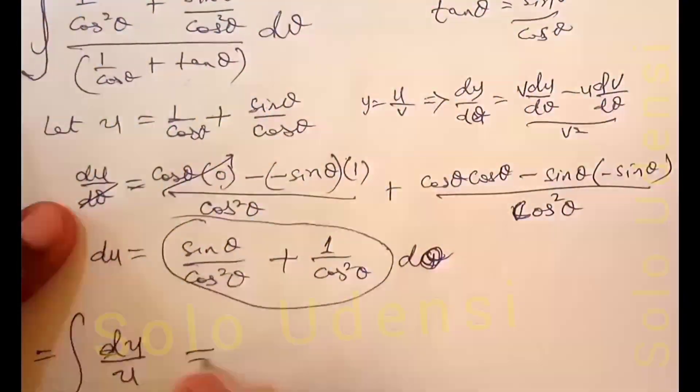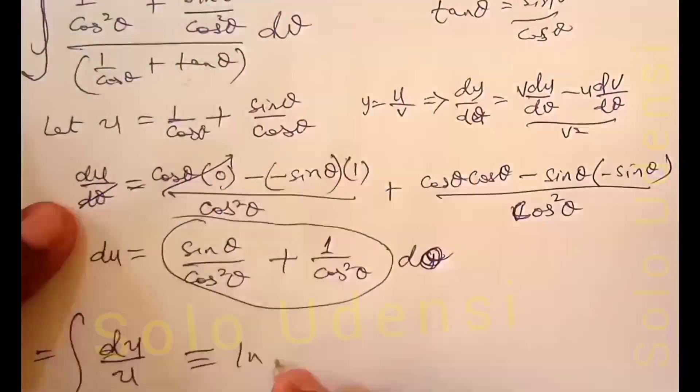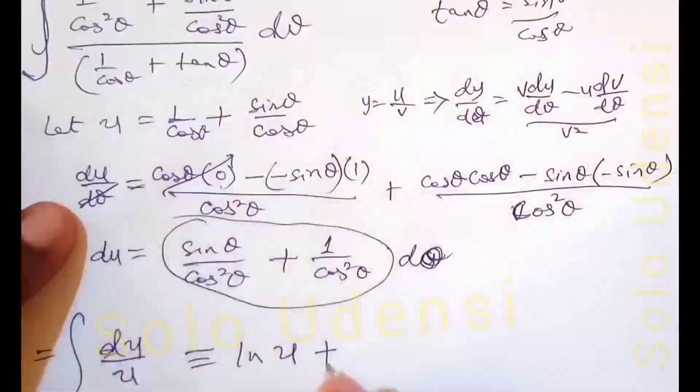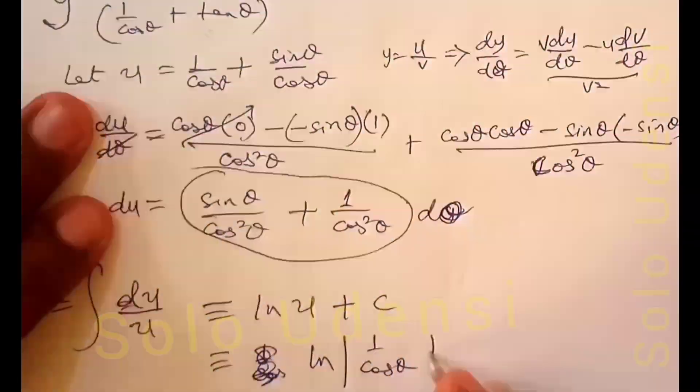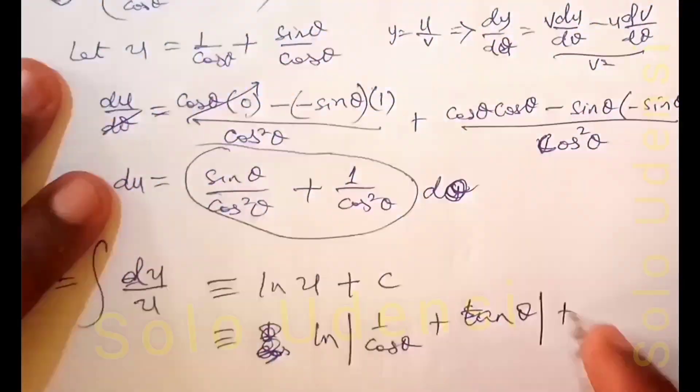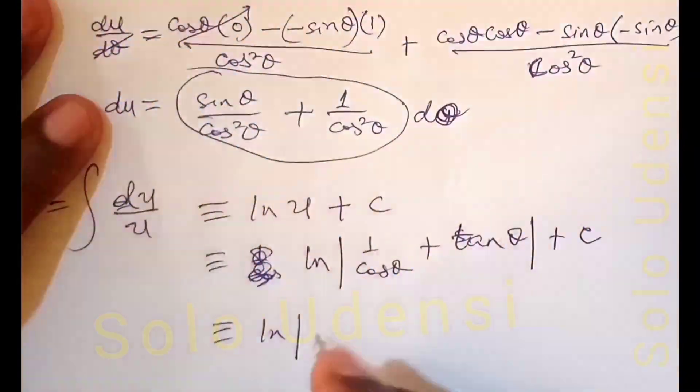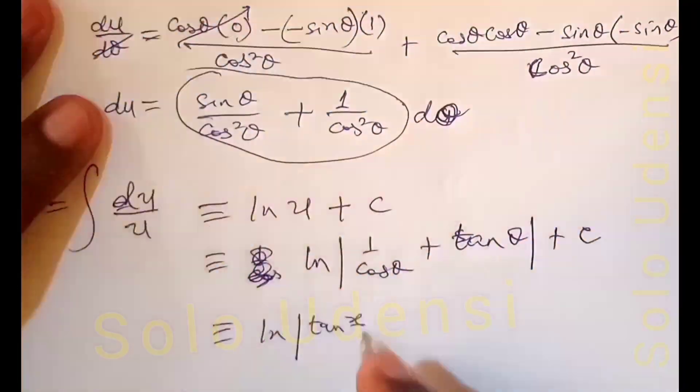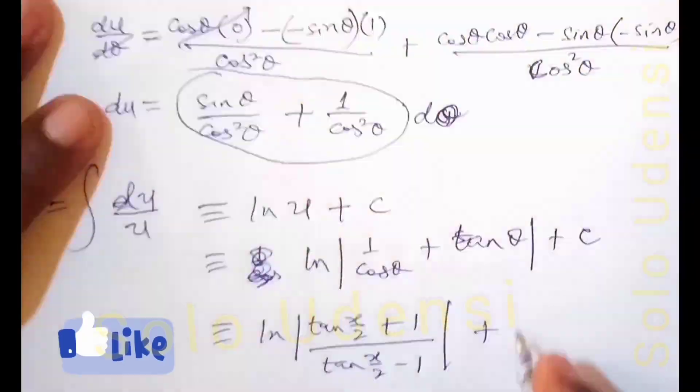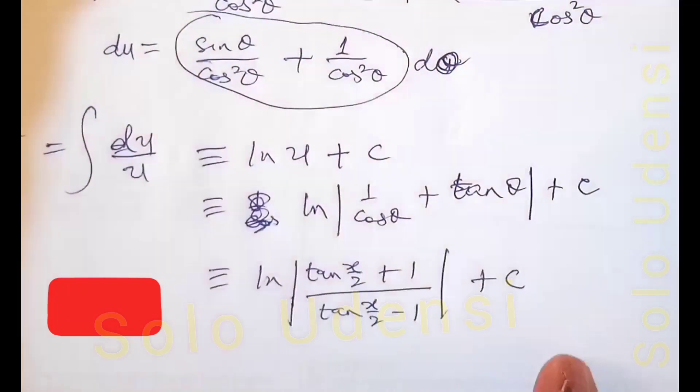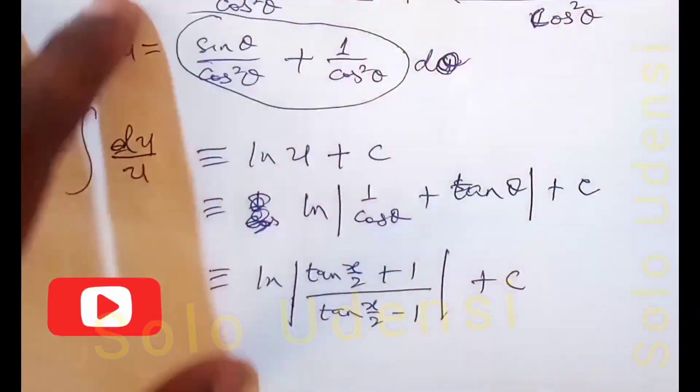So this is equivalent to ln|u| + c, which equals ln|1 over cos theta plus tan theta| + c, or ln|(tan x/2 + 1)/(tan x/2 - 1)| + c. Kindly like the video and subscribe. Thank you, bye-bye.